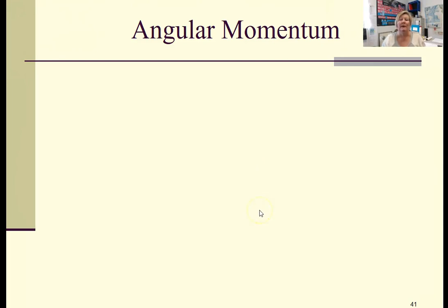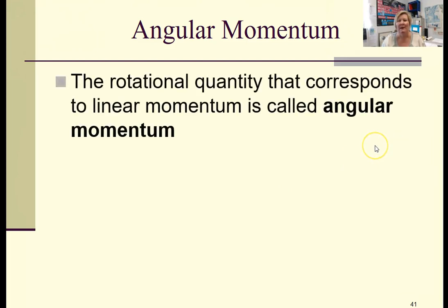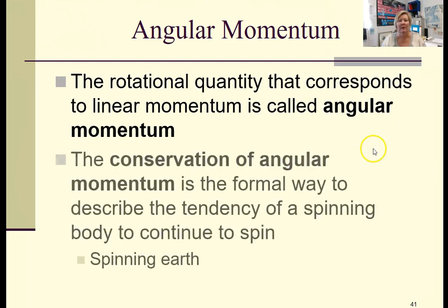Some things are not going in a straight line; they're going in a curved path. So we have angular momentum. It's the rotational quantity corresponding to linear momentum, and it is always conserved as well.